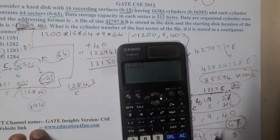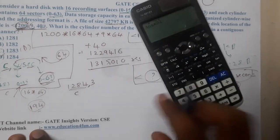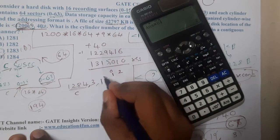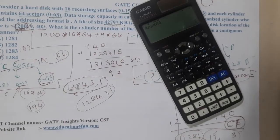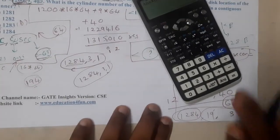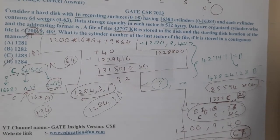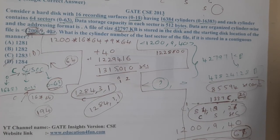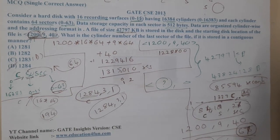The remainder after removing 3 full surfaces (3 × 64 = 192) from 194 is 2. Since numbering starts from 0, the sector index is 2, but accounting for the slot starting at 0, it's slot 1. The final location is (1284, 3, 1). I confirmed this online — 1284 is the correct cylinder number. Option D is the correct answer. Hope everyone got a clear idea. See you in the next lecture!